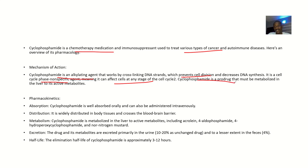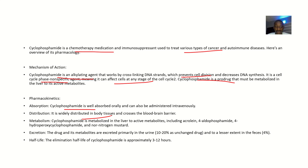Cyclophosphamide is a prodrug and is converted through its active metabolites. For absorption, it is well absorbed orally and can also be administered intravenously. For distribution, it is widely distributed in body tissues and can cross the blood-brain barrier.